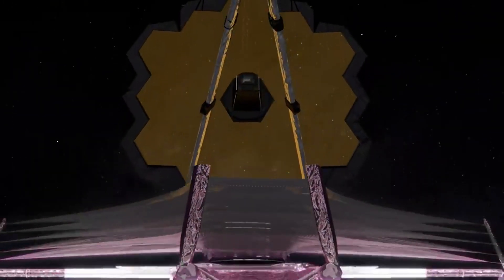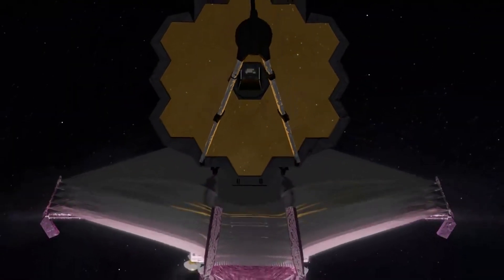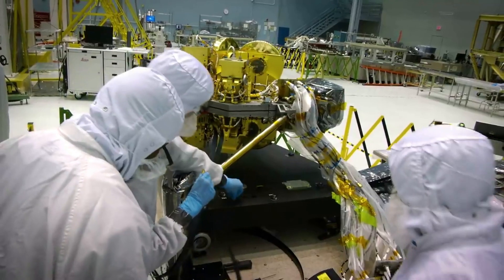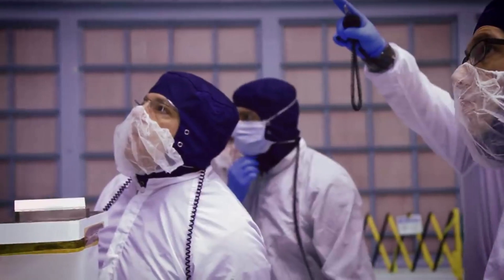For every degree the instrument temperature goes up, the dark current goes up by a factor of about 10. Once MIRI reached a frigid 6.4 K, scientists began a series of checks to make sure the detectors were operating as expected.